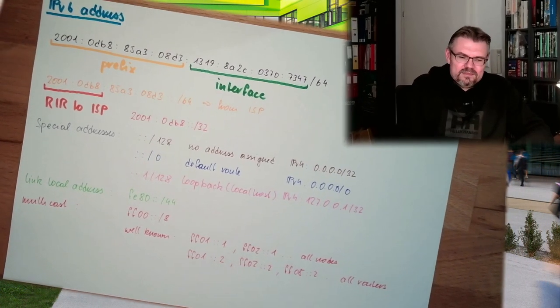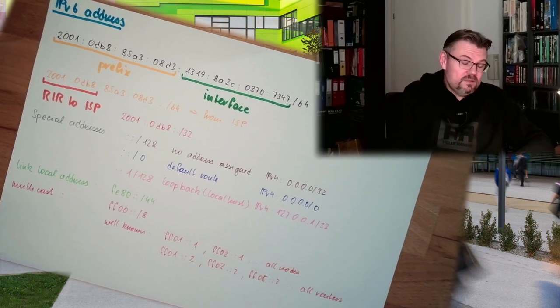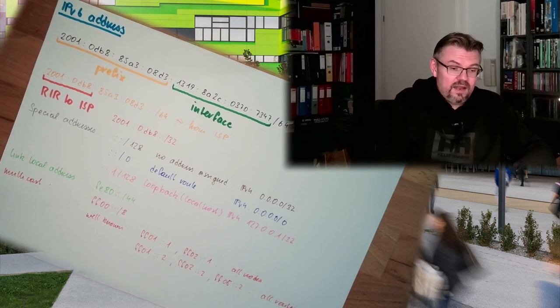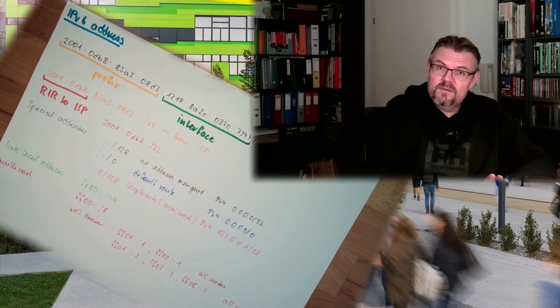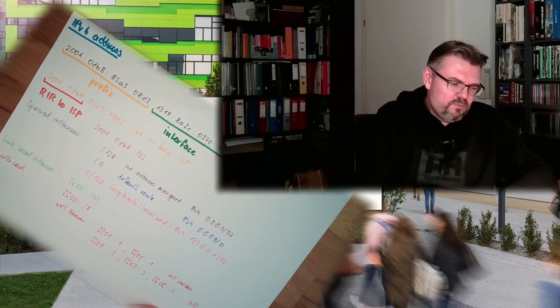We will talk about this in the next video — how a device wakes up, starts, and then needs an IP address to begin communicating. In IP version 4 we had DHCP for this, and in IPv6 this is done automatically. How it is automatically done — how an interface gets its IP address from all these rules and learns its prefix — I will explain in the next video. Thank you very much for listening. Goodbye.